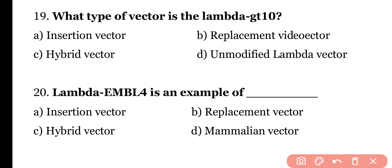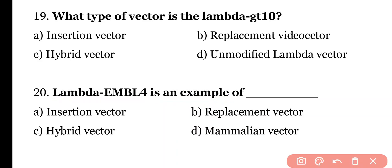Question 20: Lambda EMBL4 is an example of insertion vector, replacement vector, hybrid vector, or mammalian vector. Correct answer is option B. Lambda EMBL4 is a type of replacement vector.